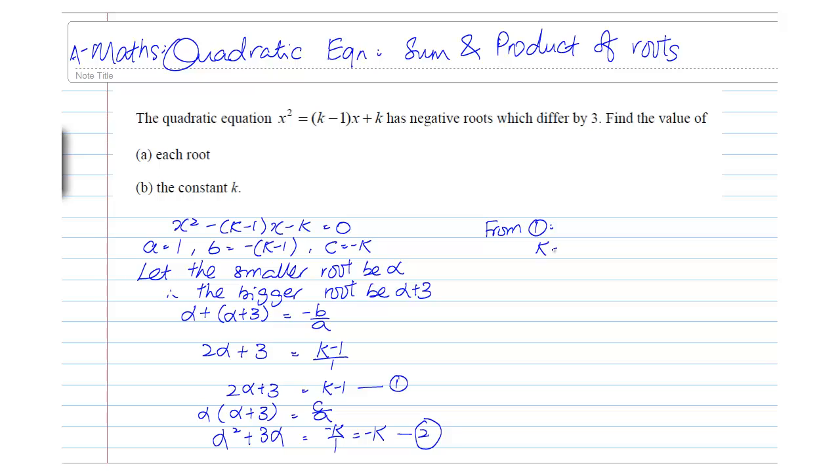From equation number 1, k is equals to 2 alpha plus 4. So, right now I call this equation 3.